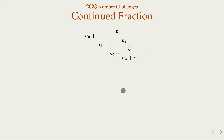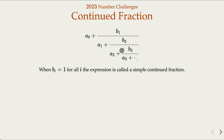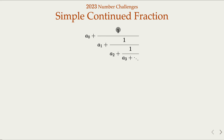For a continued fraction, it has a generic form where we have a_i and b_i as different numbers — they could even be complex numbers in some cases. Here we introduce a special form where all the b's are one, and we call it a simple continued fraction. In other words, the format has all ones for the numerators.